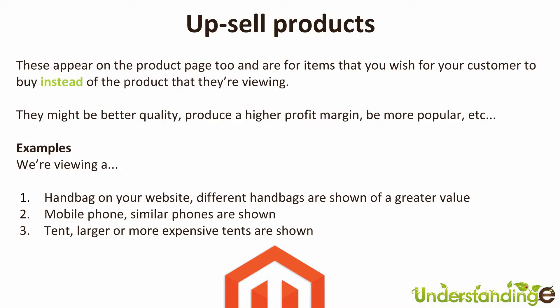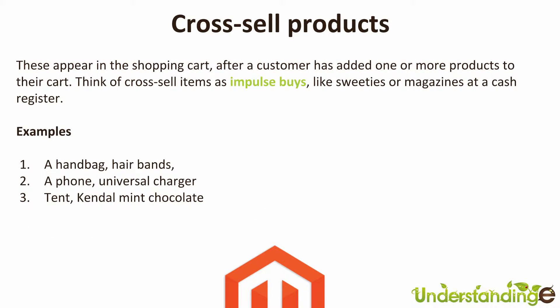The last option in Magento is cross-sell products, and these are special because they appear in the shopping cart. The easiest way to think of these is when you're in a high-street store at the checkout and you see those little stands with sweets, chewing gum, or lip gloss — basically small impulse buys, nice little add-ons to the basket which increase the basket spend.